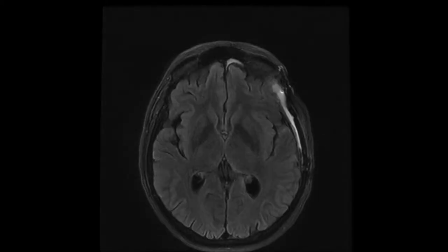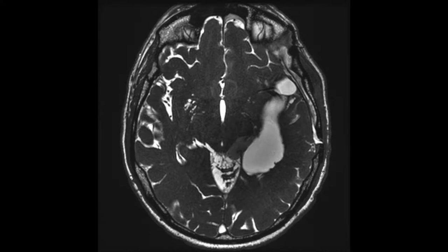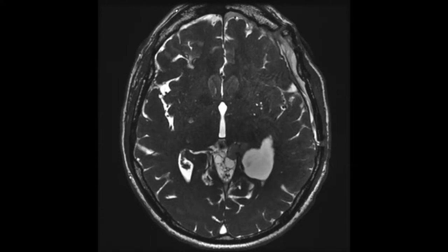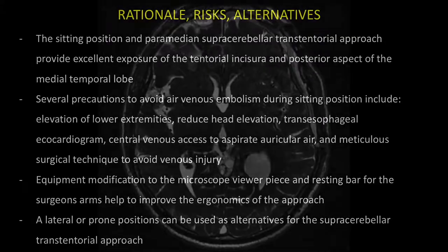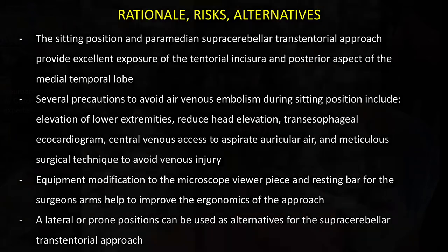And now we are going to propose an approach to this residual tumor via supracerebellar transtentorial approach. The sitting position and the paramedian supracerebellar transtentorial approach provide excellent exposure of the tentorial incisura and the posterior aspect of the medial temporal lobe. It's important to have precautions to avoid venous air embolism during the sitting position, including elevation of the lower extremities, reducing head elevation as much as possible, use of a transesophageal echocardiogram, and use of a central venous access to aspirate air in case of air embolism.